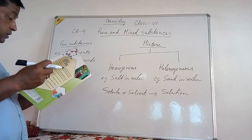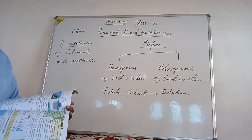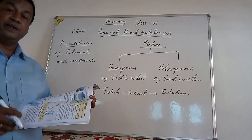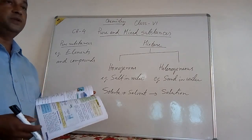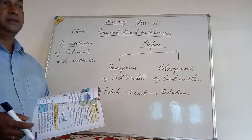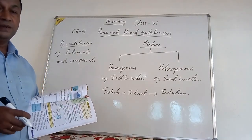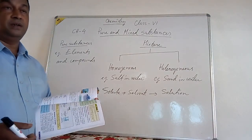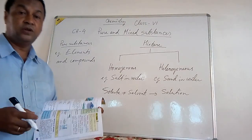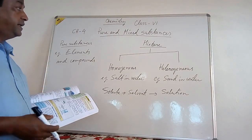Next, let's look at what a mixture is. A mixture is made up of different substances in different ratios. The ratio of components will not be fixed — they can be mixed in any proportion, which is why it is known as a mixture.